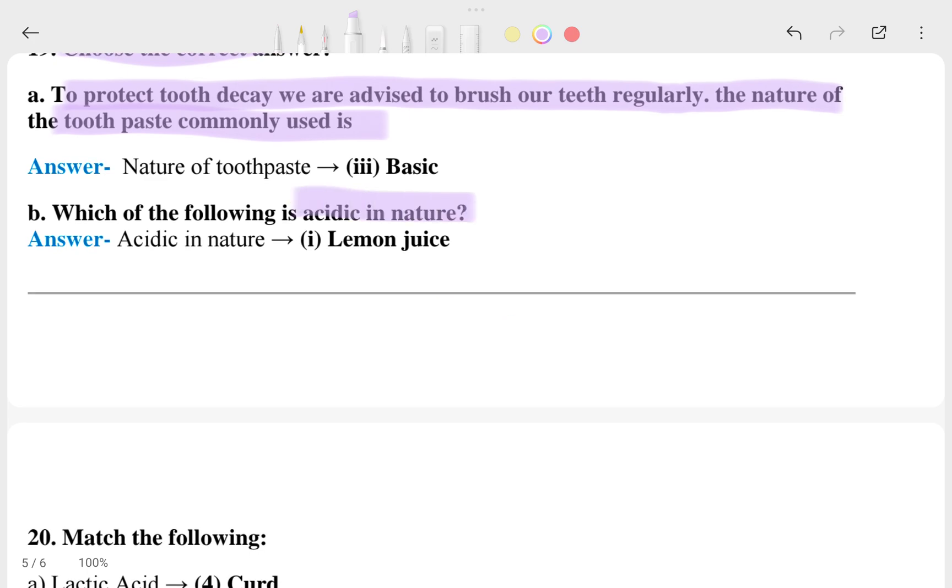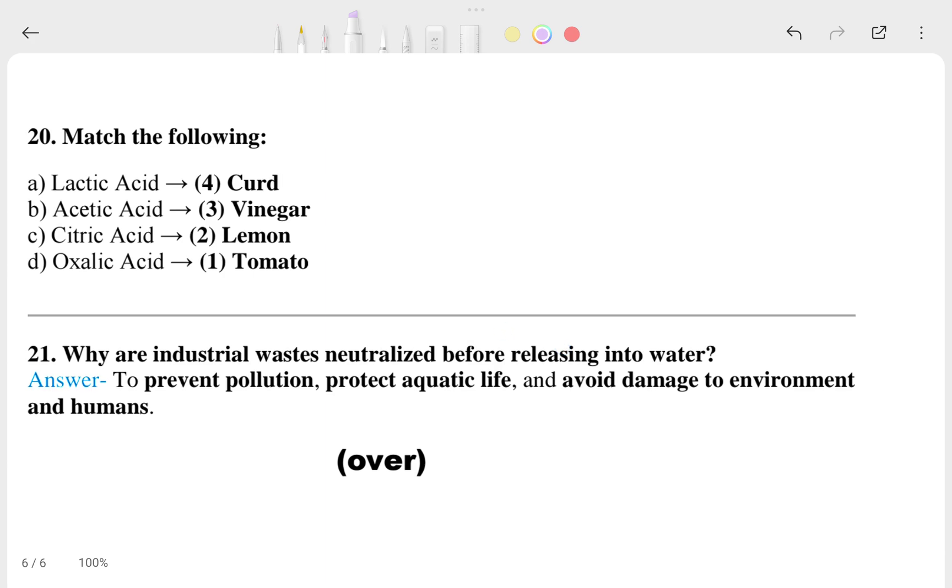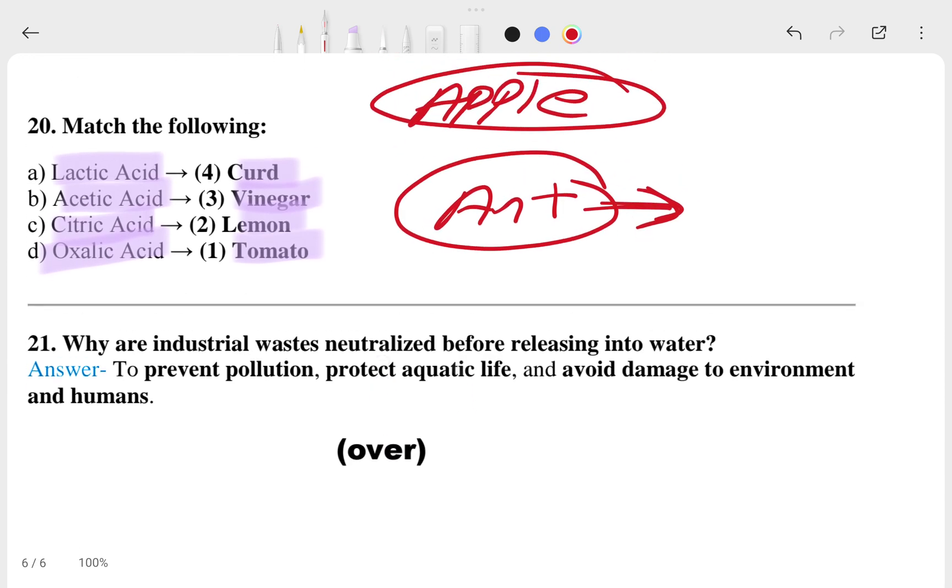Question 20: match the following. Lactic acid is found in curd, acetic acid in vinegar, citric acid in lemon, and oxalic acid in tomato. Remember these GK questions: when an ant bites you, which type of acid is present in the ant's bite? Or in apple, which type of acid is there?